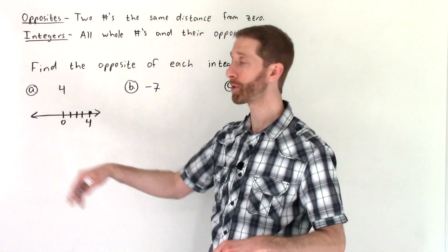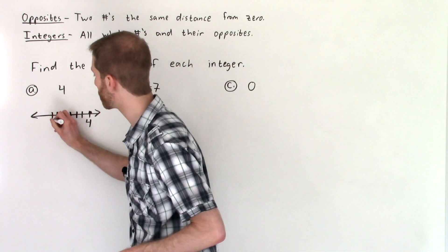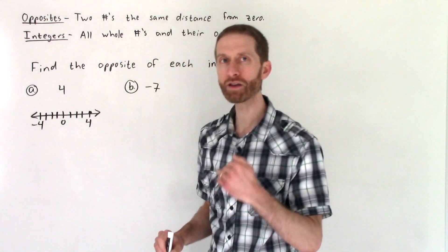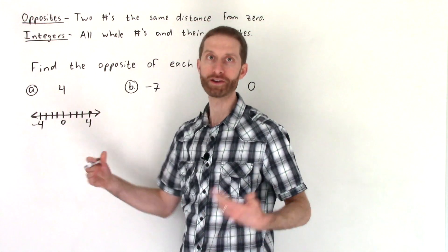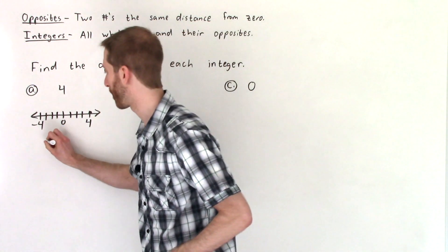We need a number in the opposite direction that is also four away. So that would be negative one, negative two, negative three, negative four. So that negative four indicates that we're in the opposite direction of positive four. So the opposite of four is negative four, and that would be our answer.